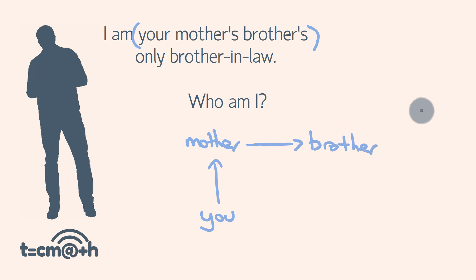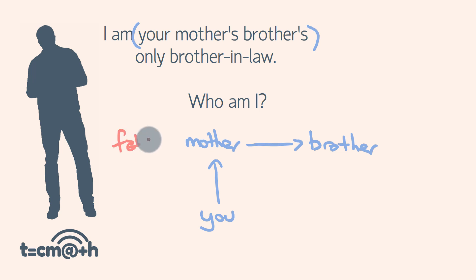It's not going to be his wife and her brother — he only has one brother-in-law. In fact, it has to be the person who is married to your mother. It will have to be your father. So, who am I? If I'm your mother's brother's only brother-in-law, that means I am your father. So that's how you go about solving these ones. Once you've got this bit of information nailed down, as you'll see, they're fairly easy.